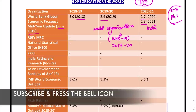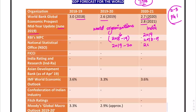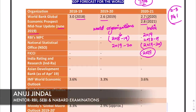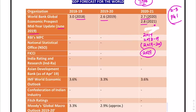Whereas when India comes out with a GDP forecast and says 2019, that means 2018-19. When it says 2020, that means 2019-2020. So when India says 2019, that means 2019 is the ending year. Whereas when an international organization says 2019, that means 2019 is the starting year. That creates a lot of confusion among students, and therefore it's important that you remember this and keep it in mind, even in the examination.